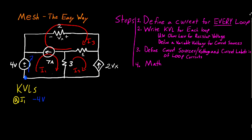The next component we see is the 7-amp current source. For this component, we don't know the potential across a current source, so we have to define a variable potential across it in order to complete our loop. We'll call this V1, defined as plus-minus in this direction. Since I defined V1 in this direction, we see the positive side of V1 first, so we write plus V1.